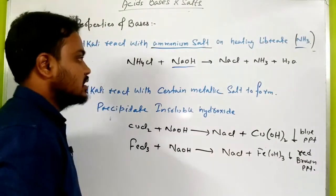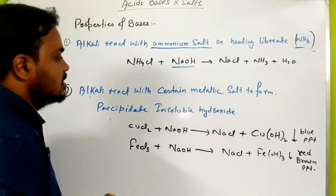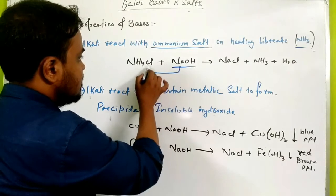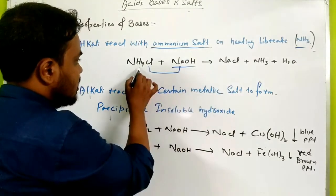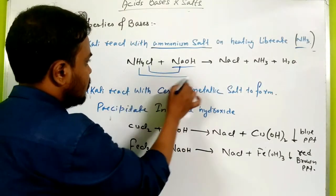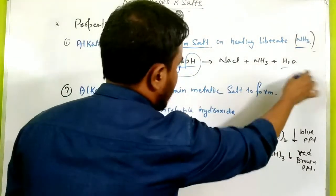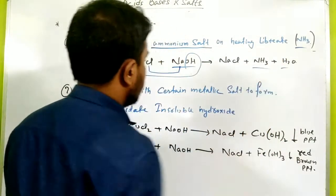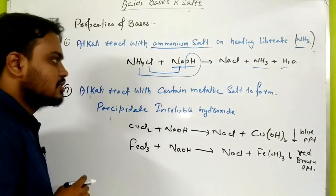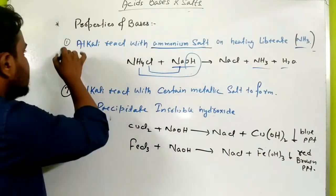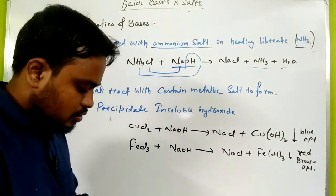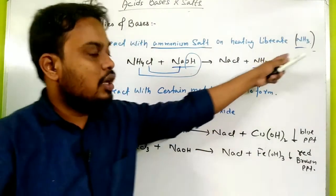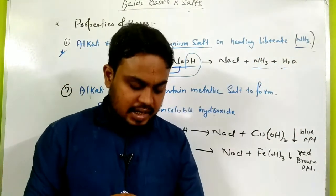To learn the reaction: NaCl is formed, one hydrogen is removed, combining to form water, and the remaining part forms ammonia gas. So: alkali + ammonium salt → on heating → ammonia gas is liberated. That was the first reaction.